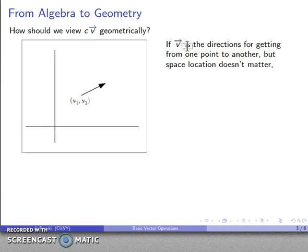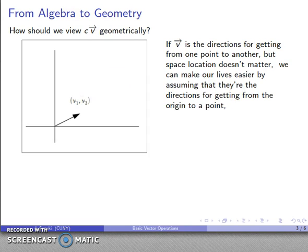So if a vector v, if we view this as the set of directions we're getting from one point to another, but our spatial location doesn't matter. So here's my vector, I'll call it v1, v2, and that tells me how to get from here to there. Well, the spatial location doesn't make a difference, so I can make our lives a lot easier by assuming that our directions are always going to be from the origin to some point.